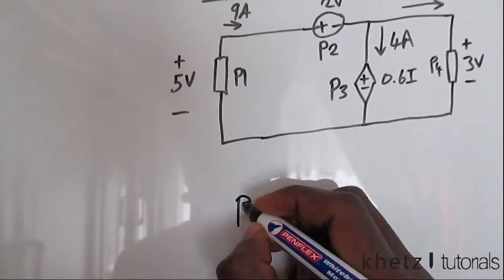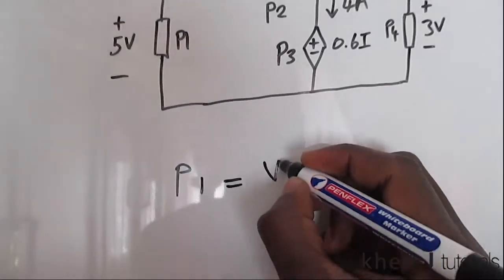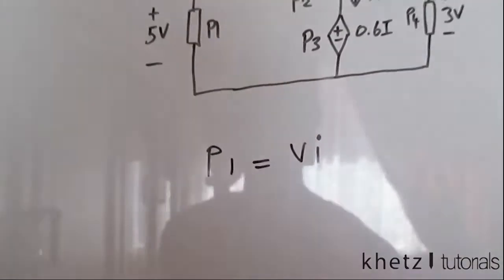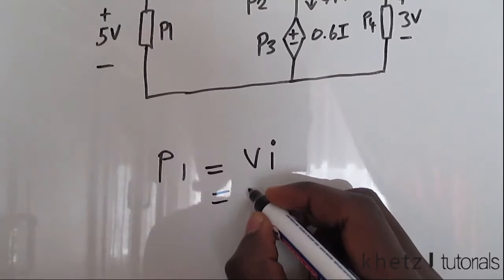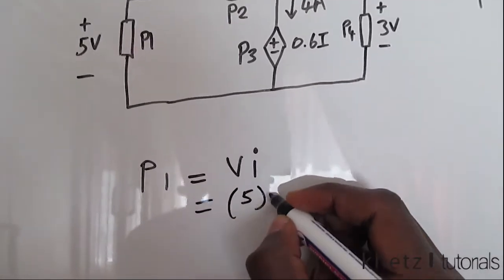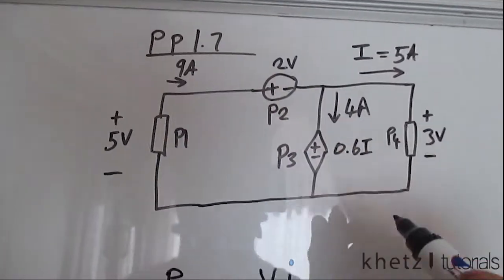So P1 is equals to VI, which is equals to, the voltage is given as 5, and the current which passes through this element is 9.